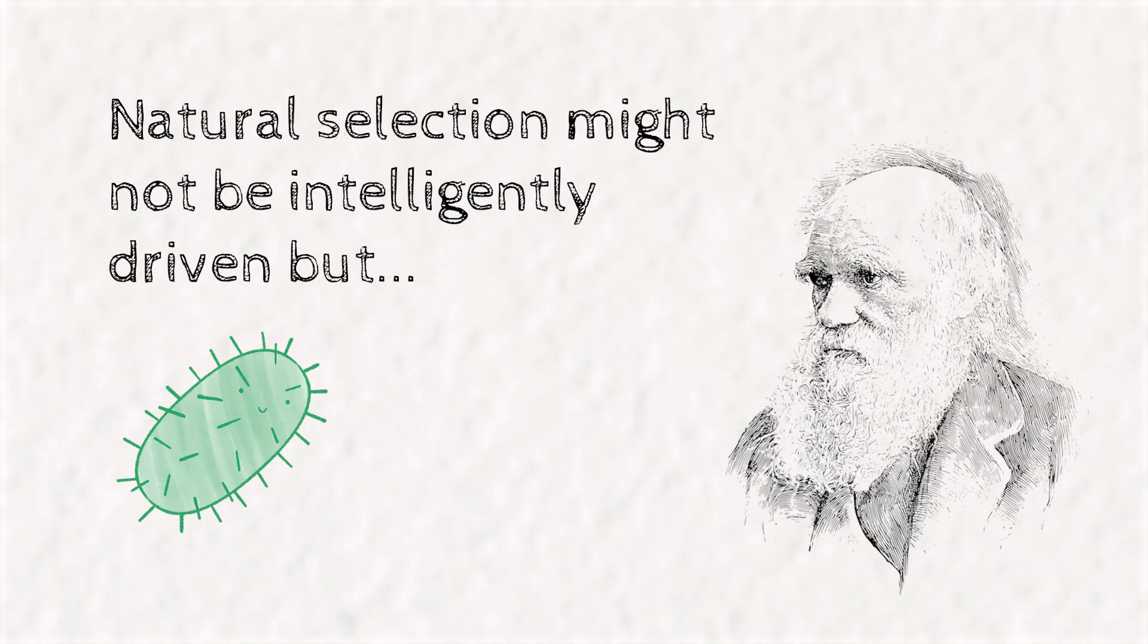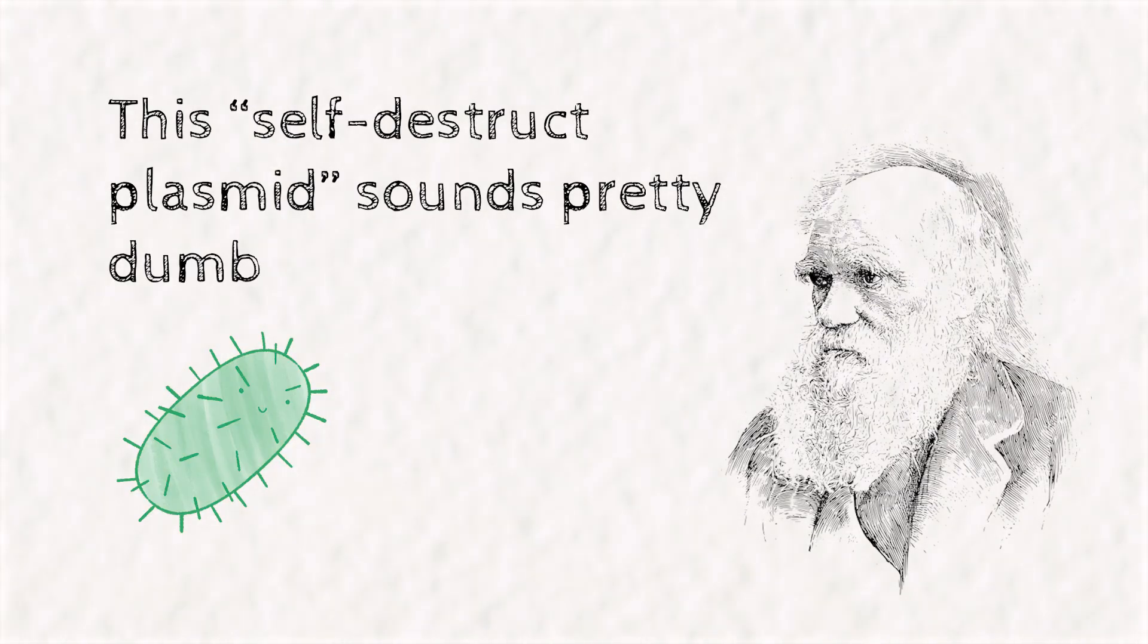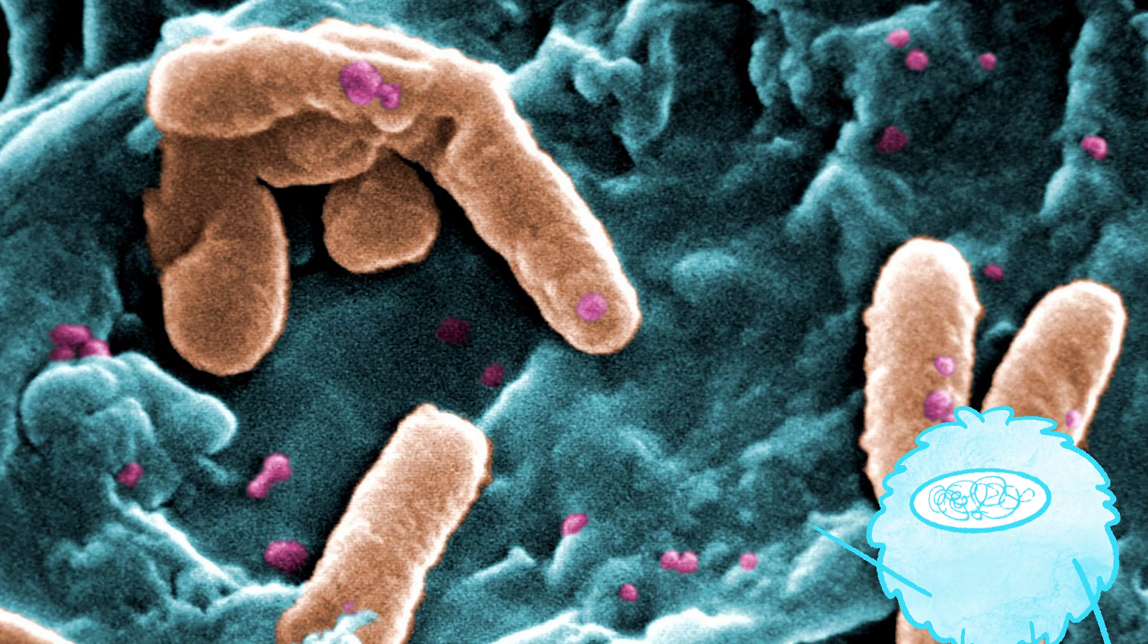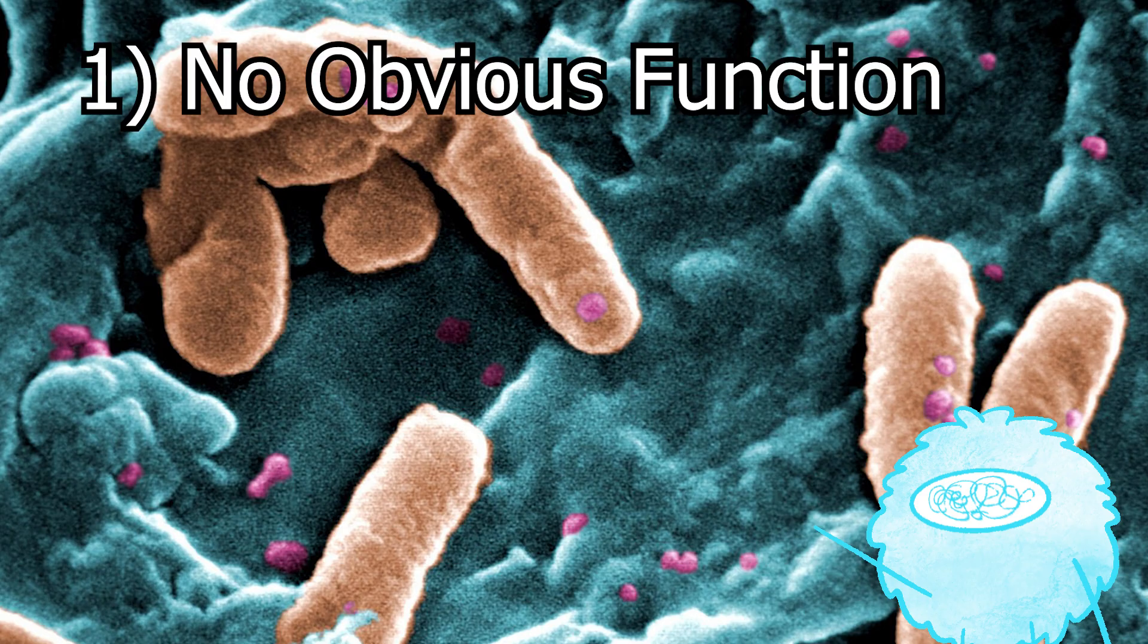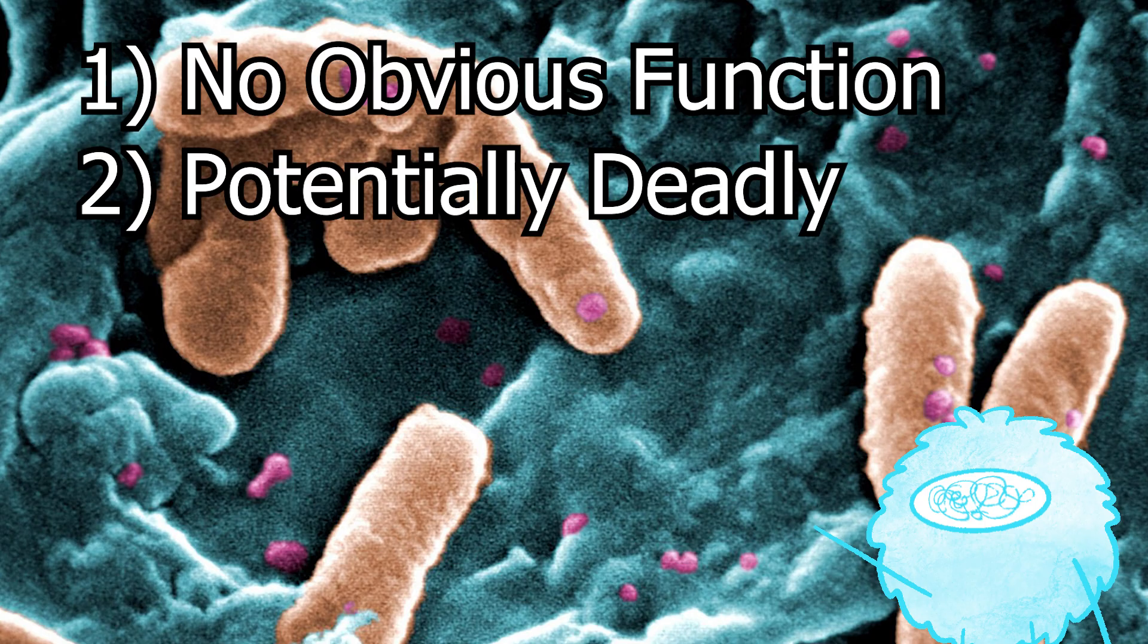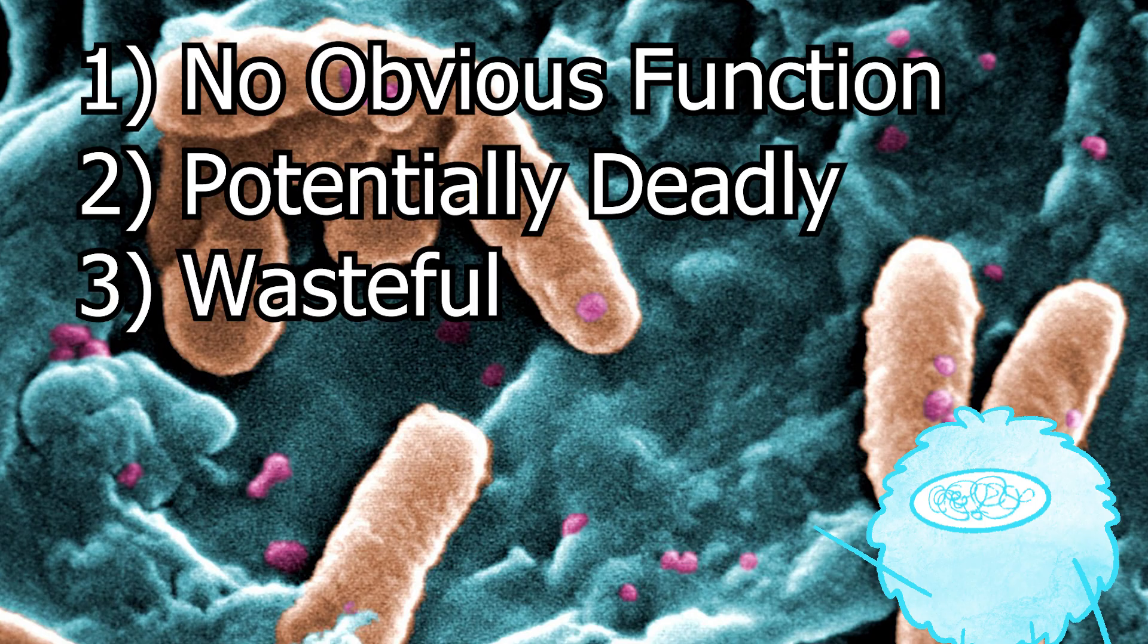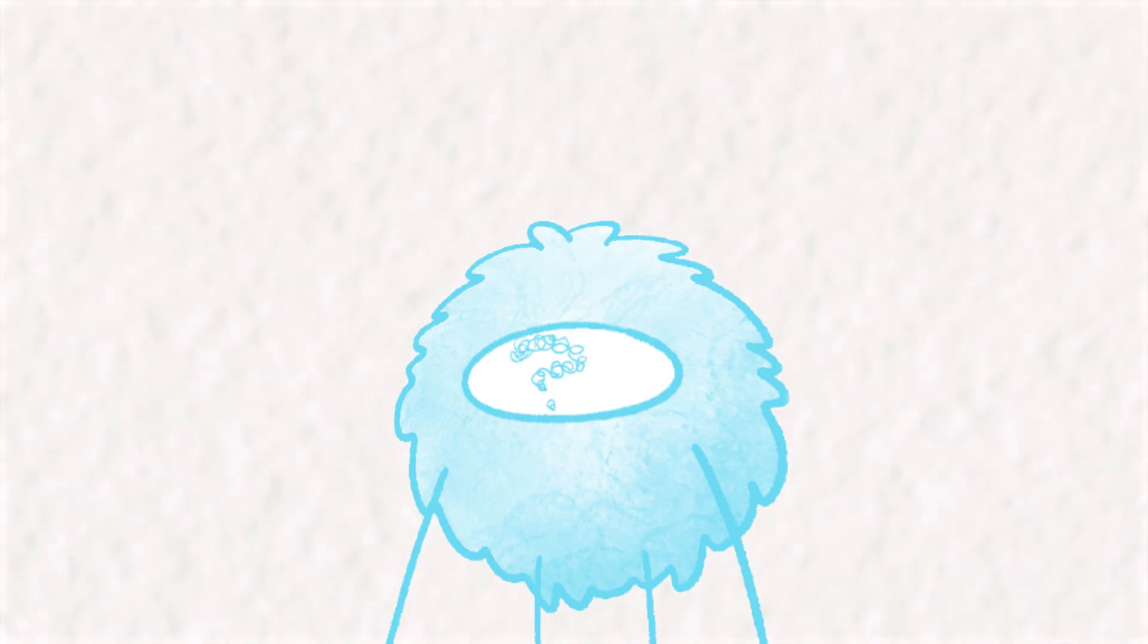Some of you more biologically inclined folks might be wondering to yourself, after millions of years of natural selection, why in the heck would a bacteria evolve this piece of DNA that is not obviously useful, potentially deadly to its hosts, and puts a strain on its mRNA and protein-making machinery? The answer isn't obvious, so here are some possible hypotheses from some very smart people.